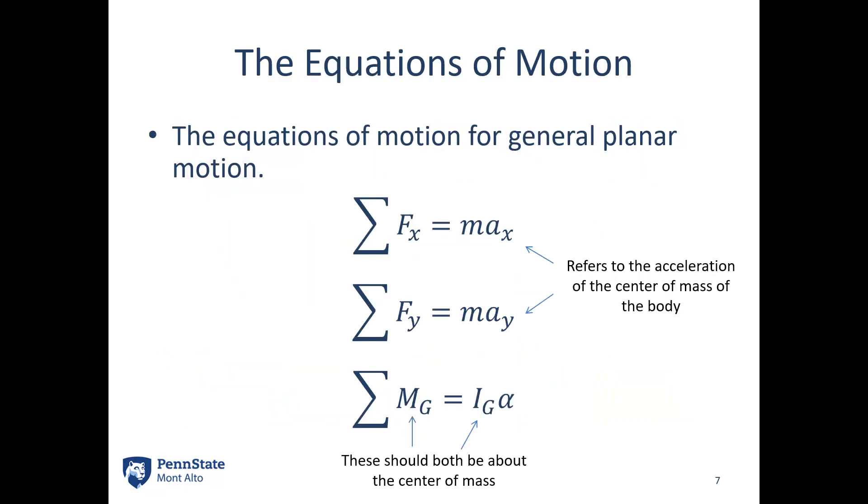So the equations of motion again, for each of those components, it's going to be sum of forces in the X is equal to mass times acceleration in the X. Sum of forces in the Y is equal to mass times acceleration in the Y. And sum of moments about the center of mass is equal to mass moment of inertia times the angular acceleration. Remember, all of these refer to the center of body or center of mass of each of those individual pieces. And this also applies to the moments and the mass moment of inertia as well.